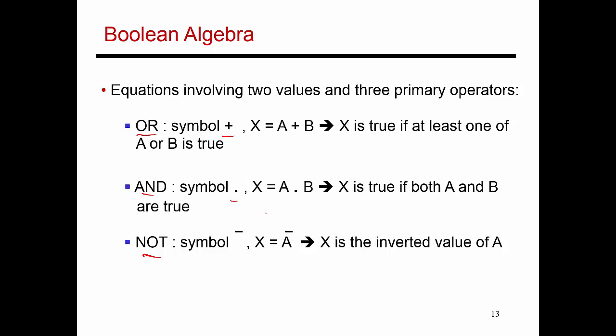If I want to say that a logic block is implementing the OR logic, you basically say that the output X is A or B. That means X is true only if at least one of A or B is true. Similarly, X is true if both A and B are true. That's the AND gate.